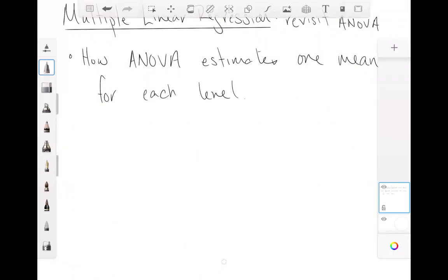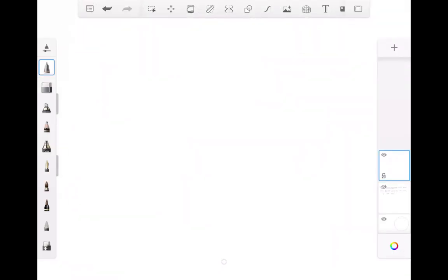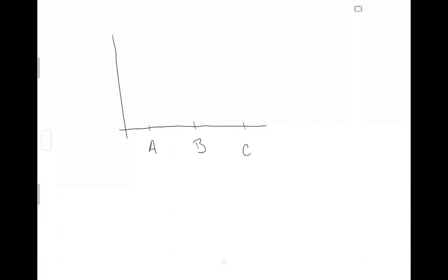Remember that analysis of variance has some categorical explanatory variable on the x-axis for which there is more than two levels. And then there's a response variable on the y-axis which is numeric, the same as for multiple linear regression, which also has one numeric response variable.